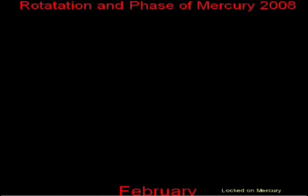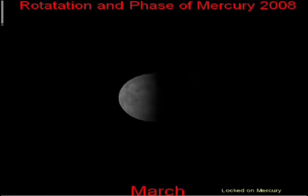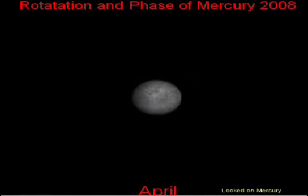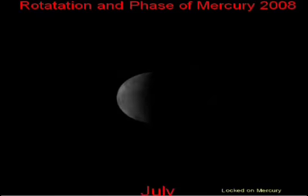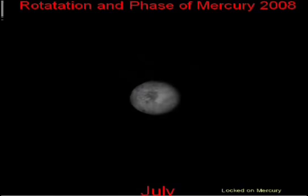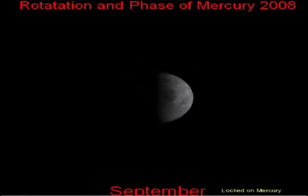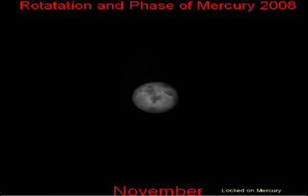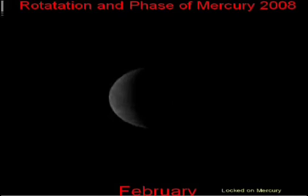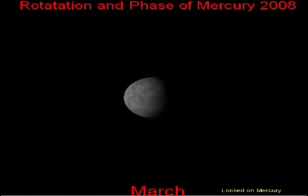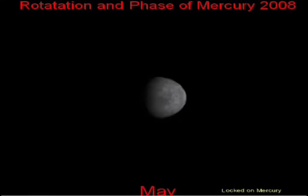Most everyone's familiar with the phases of the Moon, but Mercury goes through phases too. When Mercury is positioned on the opposite side of the Sun, at superior conjunction, its phase is 100% — you might call it the full Mercury. When Mercury falls between the Earth and the Sun, at inferior conjunction, its phase becomes 0%, a new Mercury.